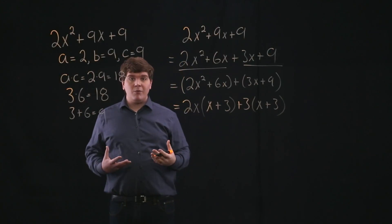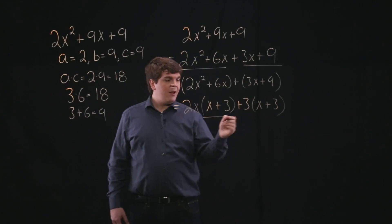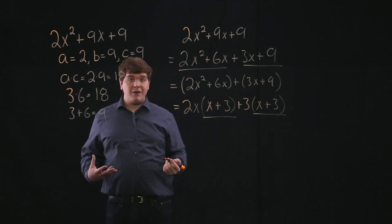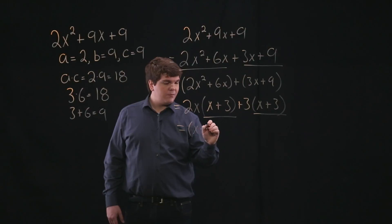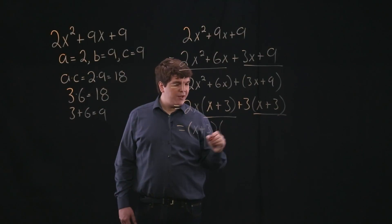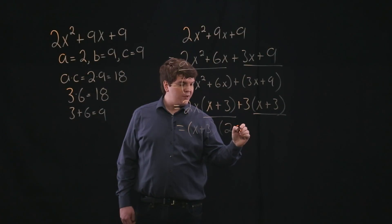Now you'll note that each of these terms have an x plus 3 in common. So we can factor out an x plus 3. We're left with x plus 3 times 2x plus 3.